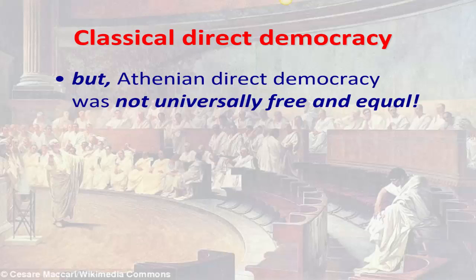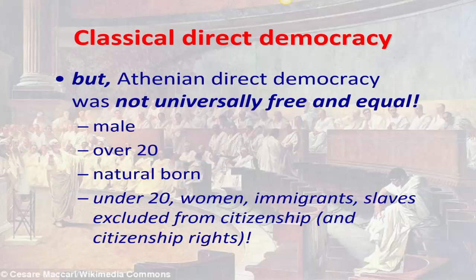It's important to note, however, that classical direct democracy in the Athenian polis was not universally free and equal. If you were a citizen, you had complete free and equal rights to participate, but to be a citizen you had to be male, over 20 years of age, and a natural-born Athenian. If you were under 20, a woman, an immigrant — someone born outside Athens (roughly equivalent to someone from St. Louis moving there) — or a slave, you were excluded from citizenship and therefore from citizenship rights. Notably, the population of slaves in Athens far exceeded the number of citizens.